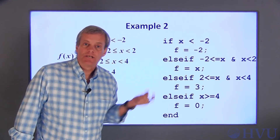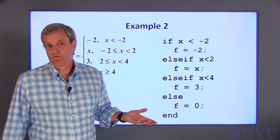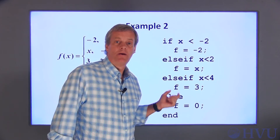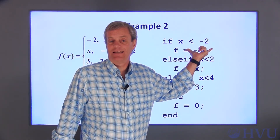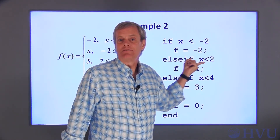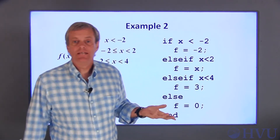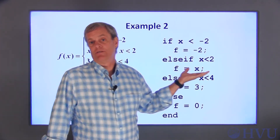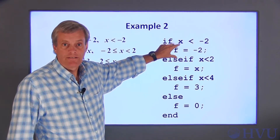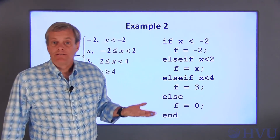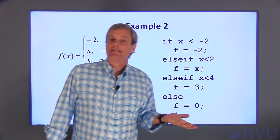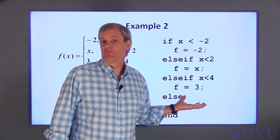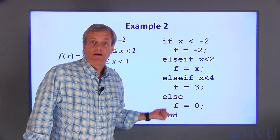However, I can simplify the implementation by taking advantage of the way IF structures work. If I keep in mind that we exit the structure after the first time some condition is met, I can simplify the second criteria to just check whether x is less than 2 — I don't need to check whether x is greater than negative 2, since the code can't reach this statement unless x is already greater than or equal to negative 2. Likewise, I don't need to check whether x is greater than or equal to 2 in the next condition, since I can't get to that point unless it's already true. In this version of the code, I'll just use an ELSE statement to invoke the final condition, since as long as x is a real number, this is the only possible remaining option.